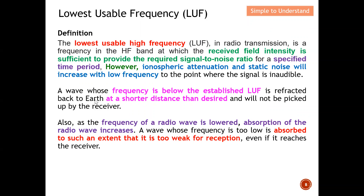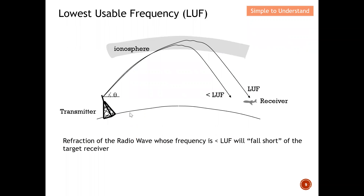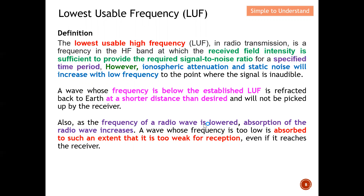The lowest usable frequency in the HF spectrum provides an acceptable signal-to-noise ratio so the receiver can recognize the signal. A wave whose frequency is below the established LUF is reflected back to earth at a shorter distance than desired and will not be picked up by the receiver. When the frequency is reduced, there is a lesser skip distance and, indirectly, a lesser skip zone, so the receiver may technically not be reachable.